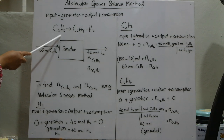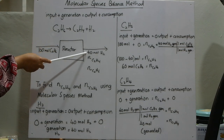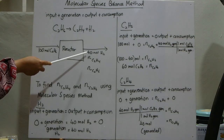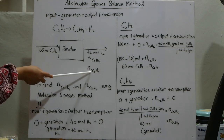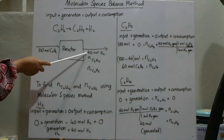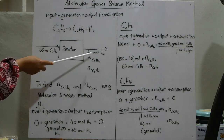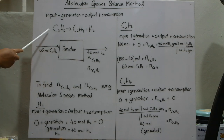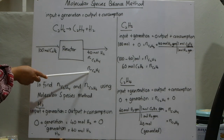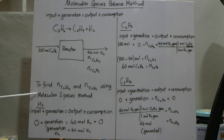If the limiting reactant reacted completely, we would produce 100 moles each of ethylene and hydrogen. But we only produce 40 moles of hydrogen, meaning the process did not go to completion — there is fractional conversion. That is why we expect some balance of C2H6 exiting the reactor, because only 40 moles were converted. So only 40 moles of C2H6 were used to produce 40 moles of H2 based on stoichiometry. We use the molecular species method to find ethylene produced and the balance of C2H6 coming out.